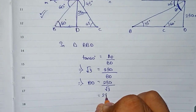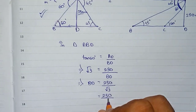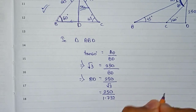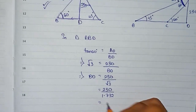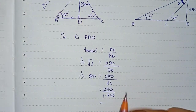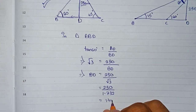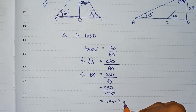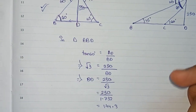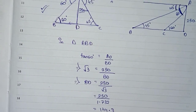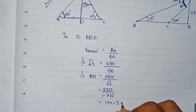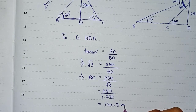The value of root 3 is 1.733. So BD equals 250 divided by 1.733, which gives 144.3. We take up to one decimal place since the question asks for the nearest whole number. So BD equals 144.3 meters.